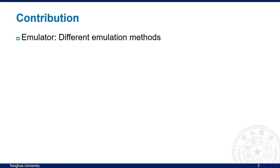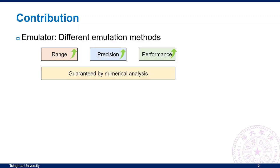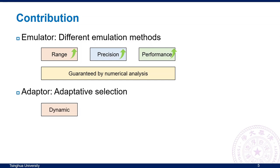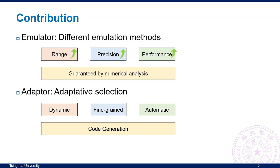To address these challenges, we propose two major contributions. To meet the challenge of emulating high bit-width data types, we propose the emulator, which provides different emulated data types achieving larger representation range, higher precision, and higher performance, guaranteed by our numerical analysis. To meet the challenge of selecting a proper data type, we propose the adapter, which can dynamically choose a data type for specific inputs, generate a computation schedule with fine granularity, and automatically choose a proper computation strategy. Our system then generates efficient code.